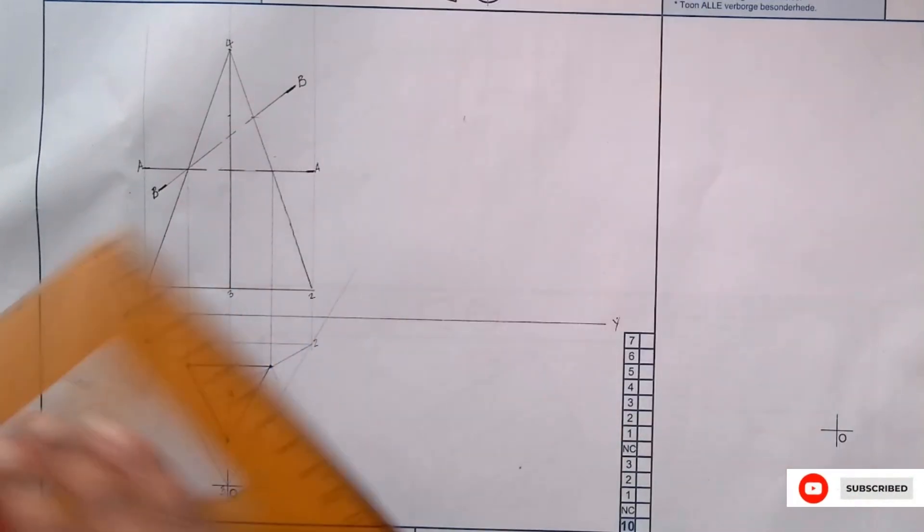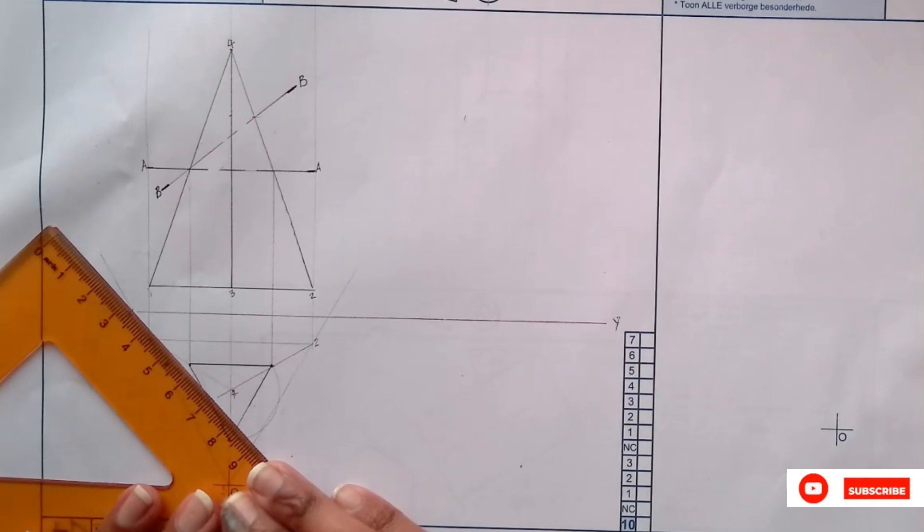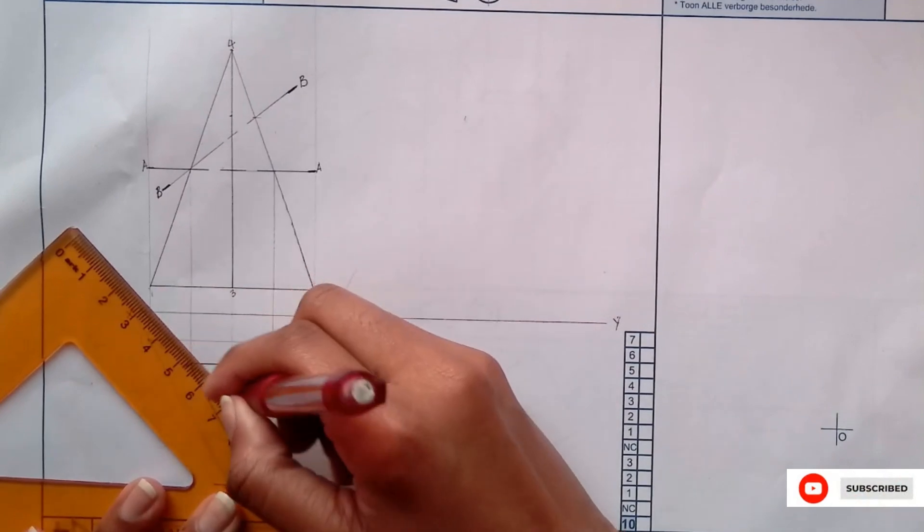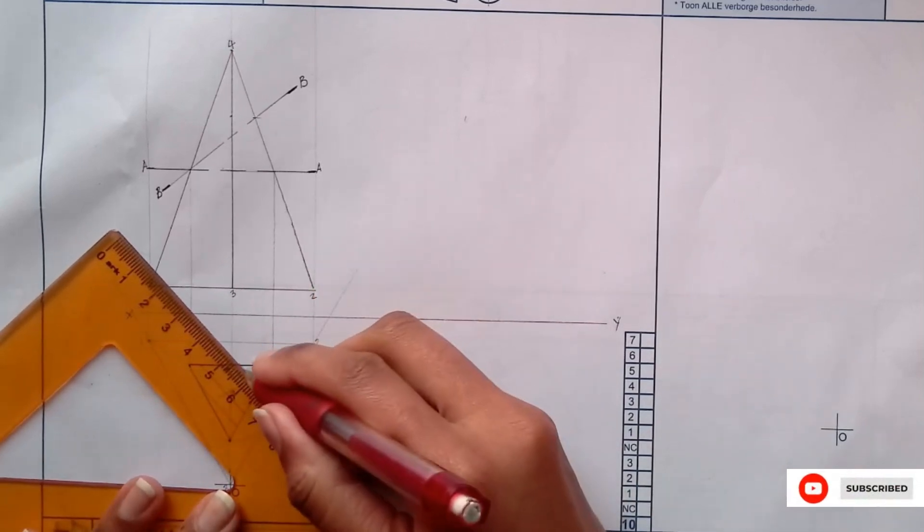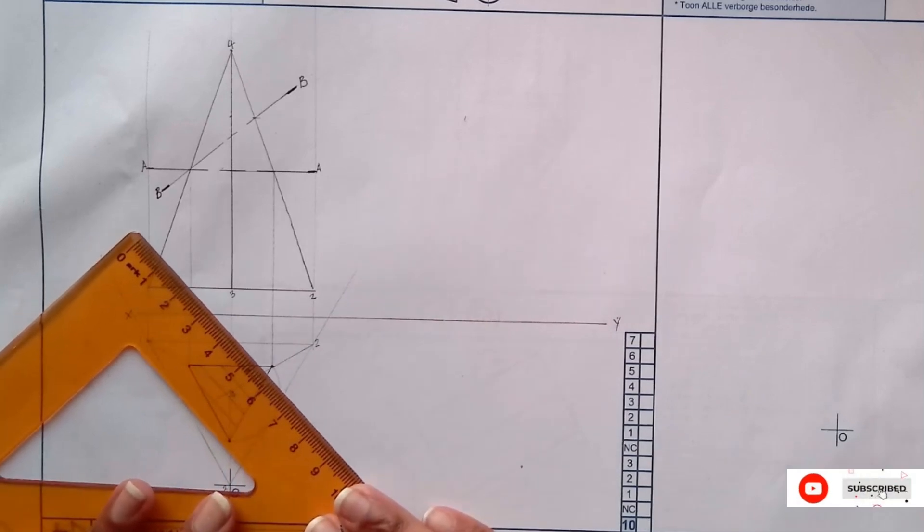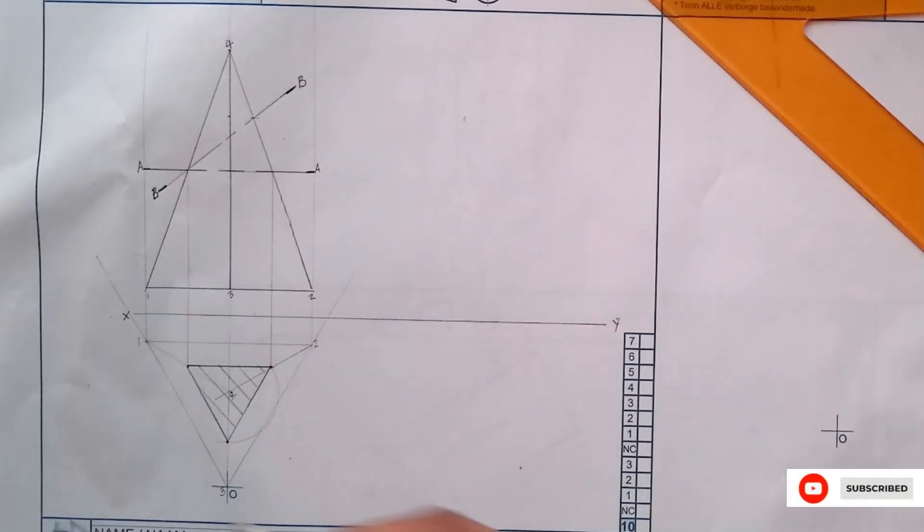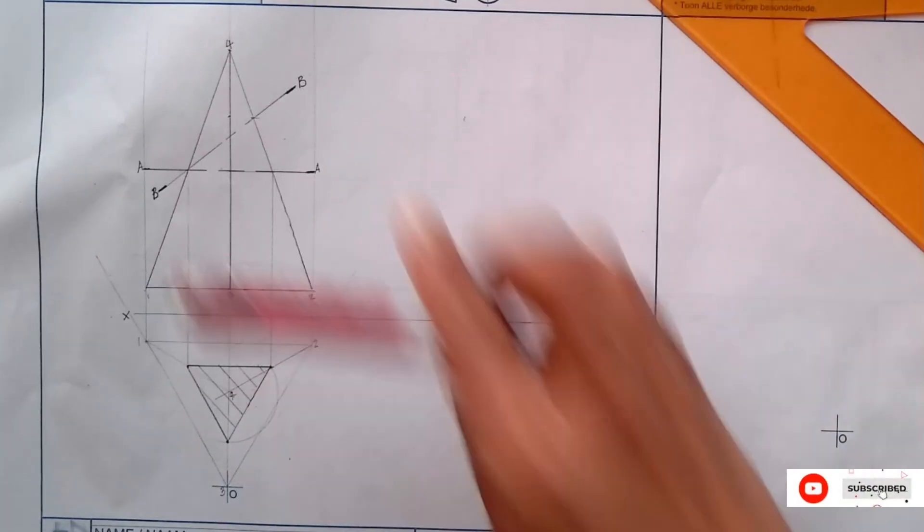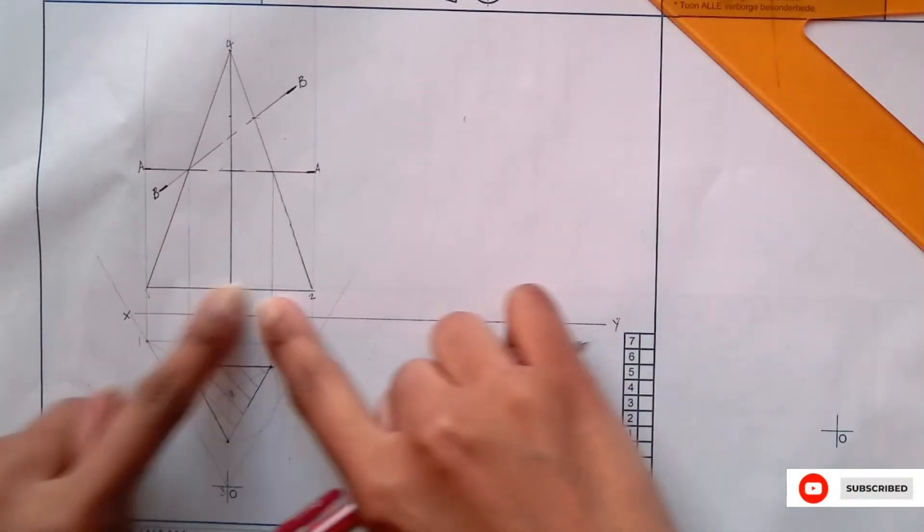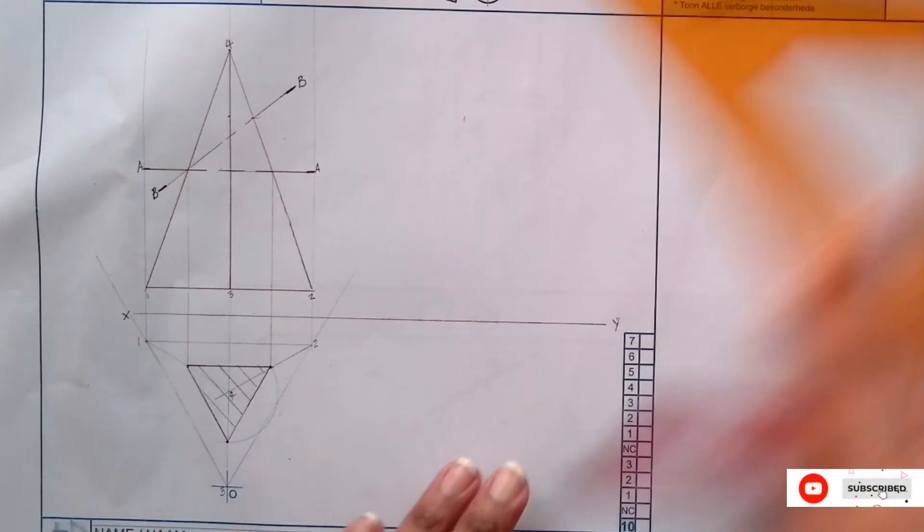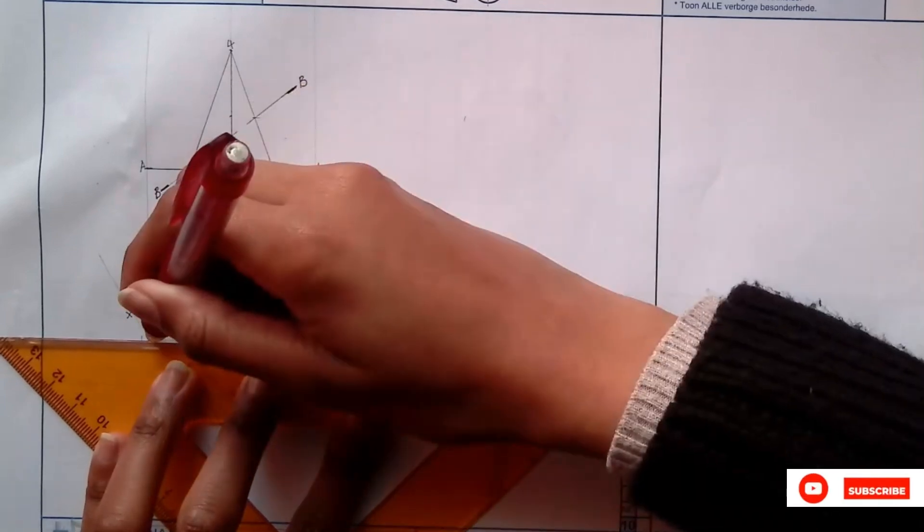This part is your AA section. Use your 45 degrees set square to hatch. Once you've hatched you can now outline the remainder. That means this top part has been cut off, you're just left with this piece there. That's why you see that the base is still intact and we will outline it.